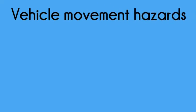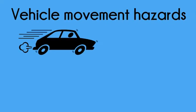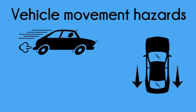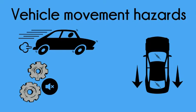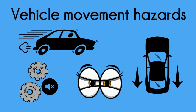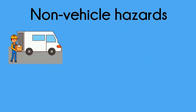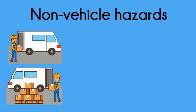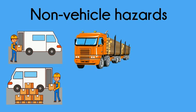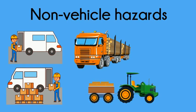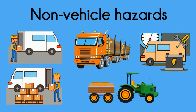Vehicle movement hazards include driving too fast, reversing, quiet machinery and poor visibility. Non-vehicle hazards include loading, unloading, securing and sheeting of loads, coupling and maintenance work.